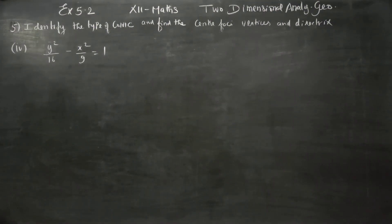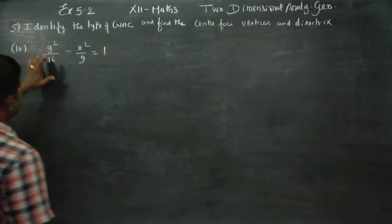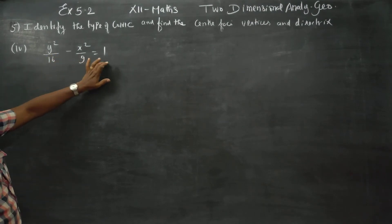Hello tool standard students, myself Karnagaran. Exercise number 5.2, sum number 5, fourth subdivision. You have to identify the conic as well as you have to find center, foci, vertices and directrix. Y square by 16 minus X square by 9 is equal to 1.